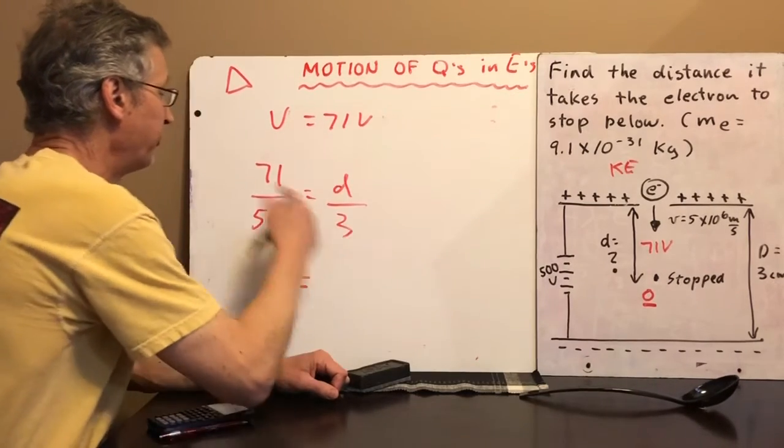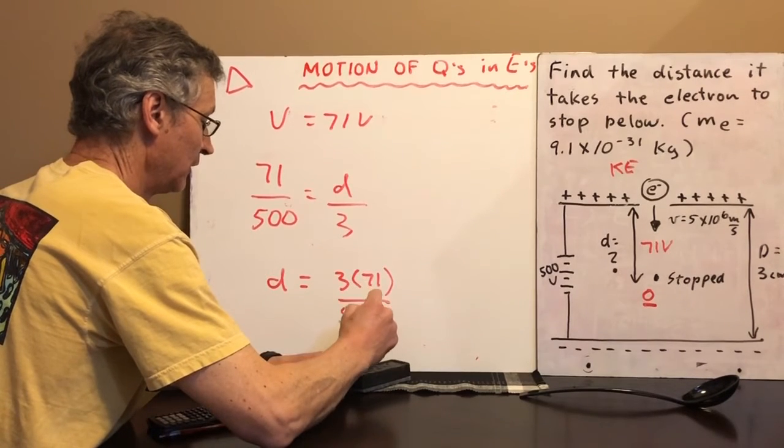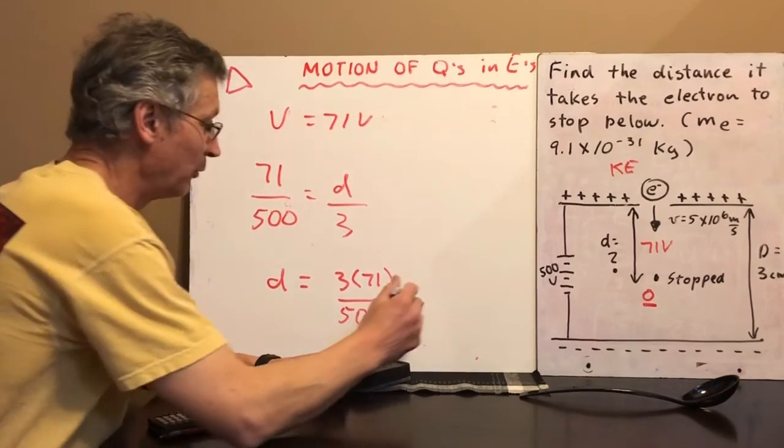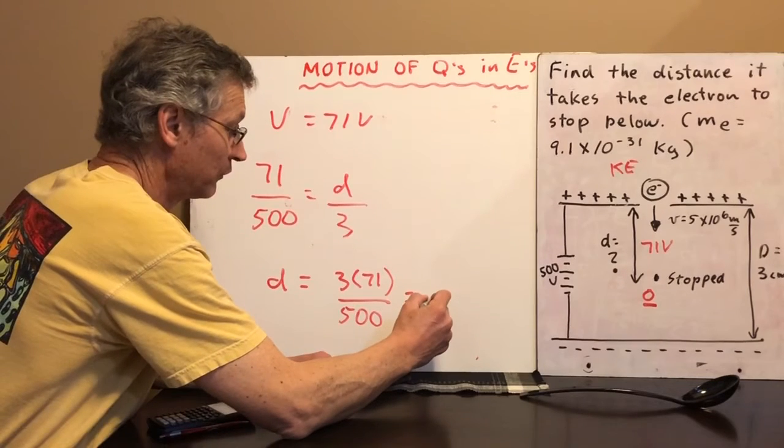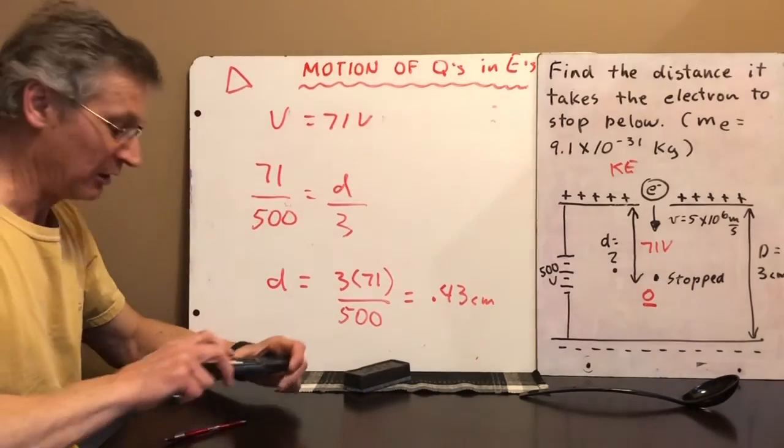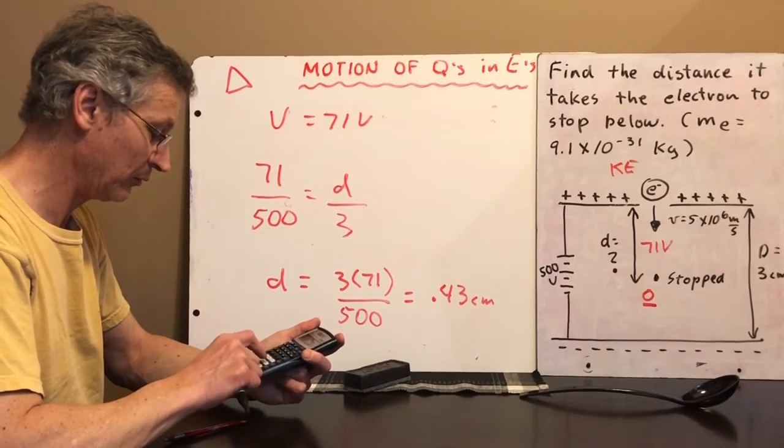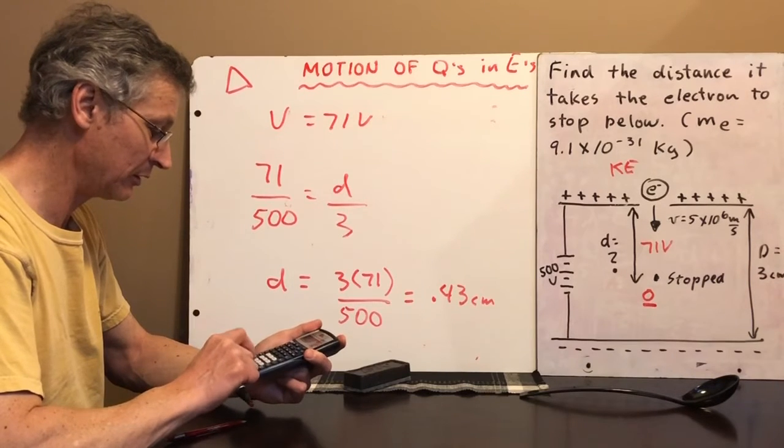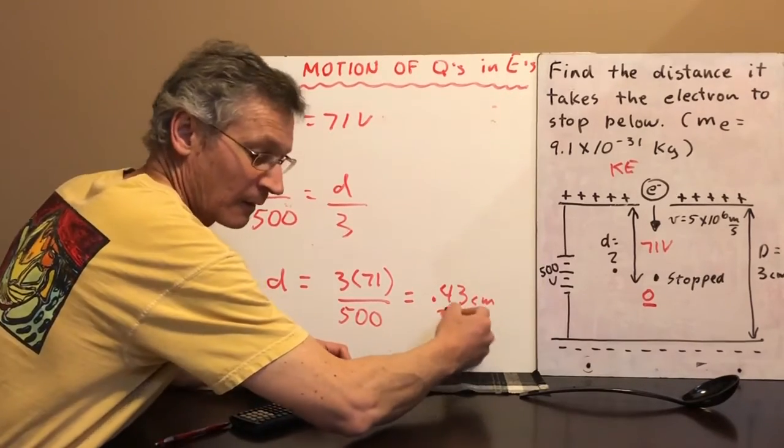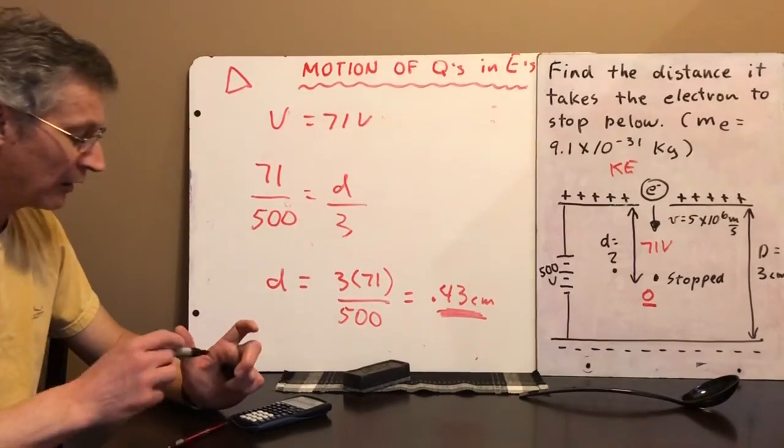So you solve this equation. The 3 goes up to the other side. And I believe this comes out to 0.43 centimeters. Actually, let me quickly just check that. Sorry about this. 3 times 71 divided by 500. Yeah, 0.43 centimeters. You are good to go. That's it. Just one example today.